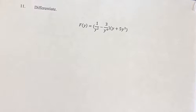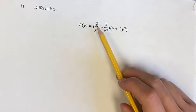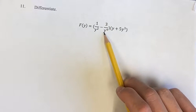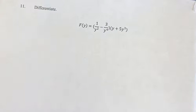Hello and welcome back to another video. This problem we're differentiating the function f of y equals 1 over y squared minus 3 over y to the fourth times y plus 5y cubed.